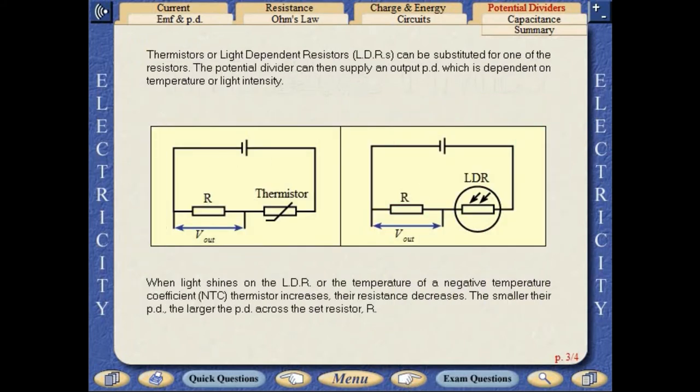Light dependent resistors or thermistors can be substituted for one of the resistors. The potential divider can then supply an output PD which is dependent on temperature or light intensity. When light shines on the LDR or the temperature of an NTC thermistor increases, the resistance decreases. The smaller their PD, the larger the PD across the set resistor R.